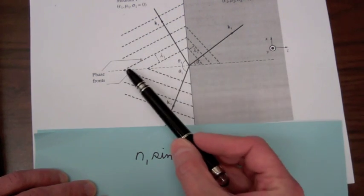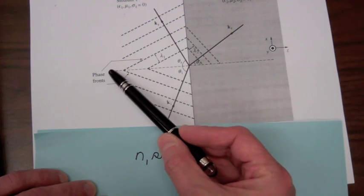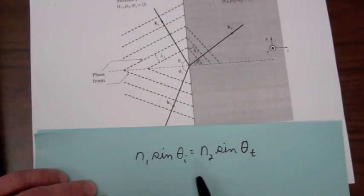If the incident angle is zero, that is the incident beam is normal to the interface, the sine of zero is zero and the transmitted angle will also be zero.